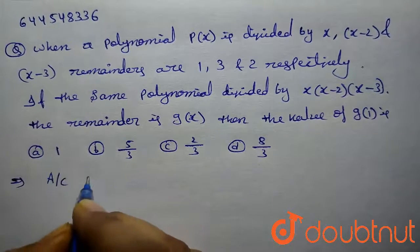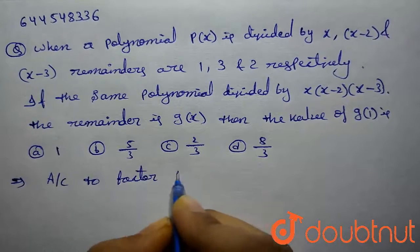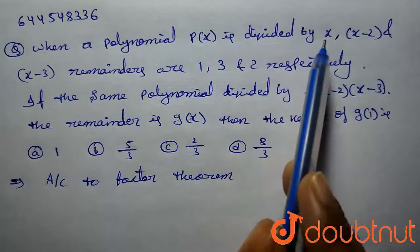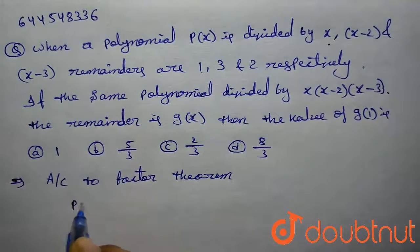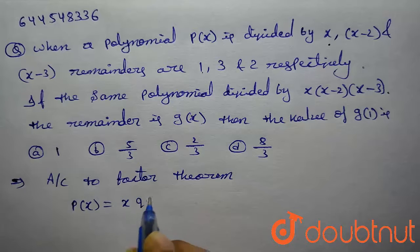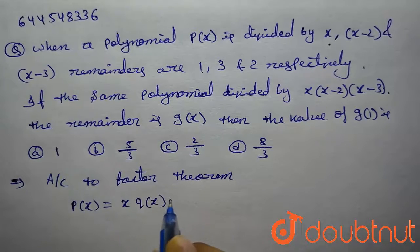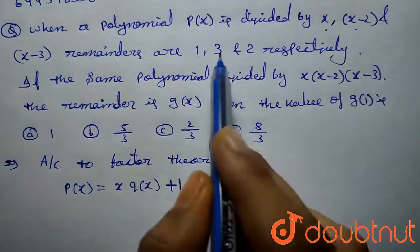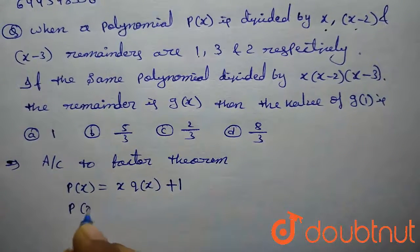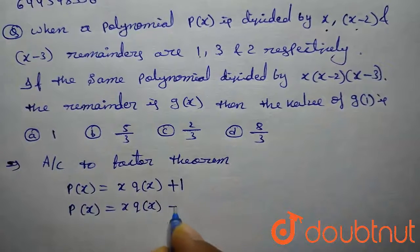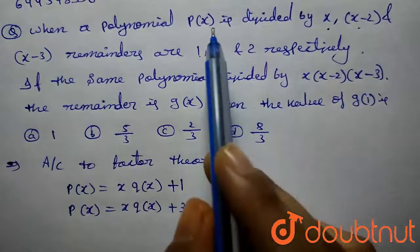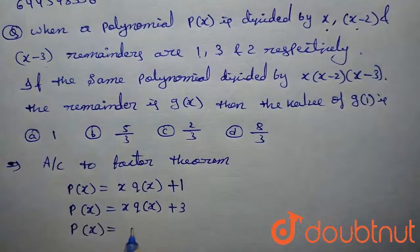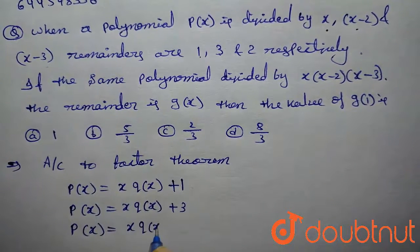According to the remainder theorem, given that polynomial p(x) is divided by x, we get remainder 1. That means p(x) = x·q(x) + 1, where 1 is the remainder. Similarly, when p(x) is divided by x minus 2, we get the remainder as 3, which can be written as p(x) = (x−2)·q(x) + 3. Similarly, when the polynomial is divided by x minus 3, we get the remainder as 2, written as p(x) = (x−3)·q(x) + 2.